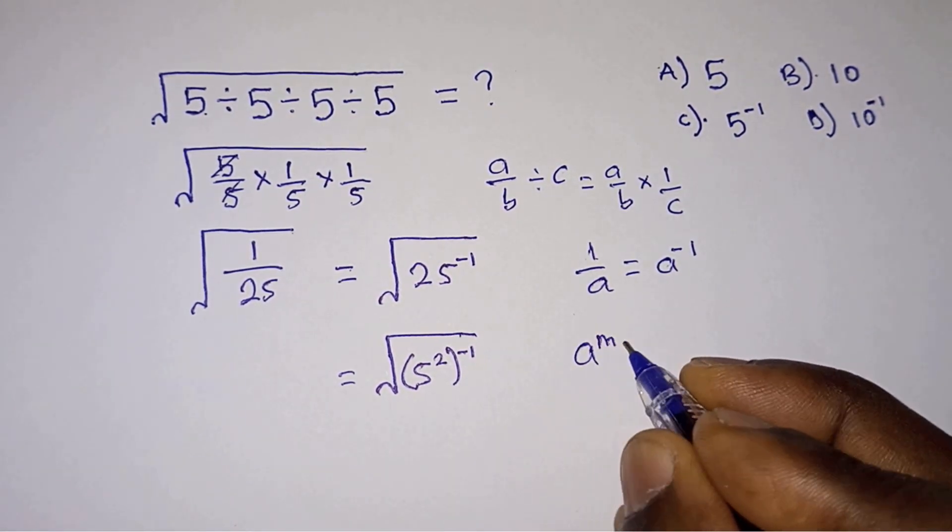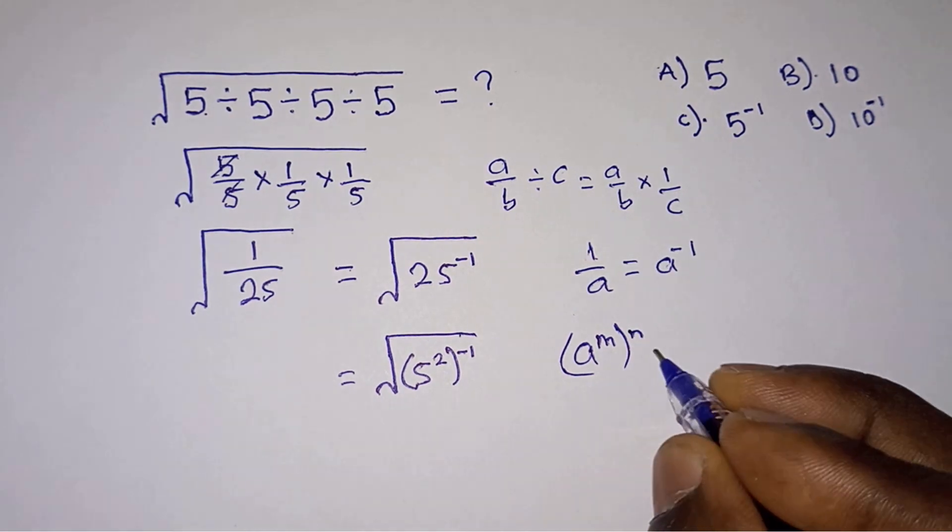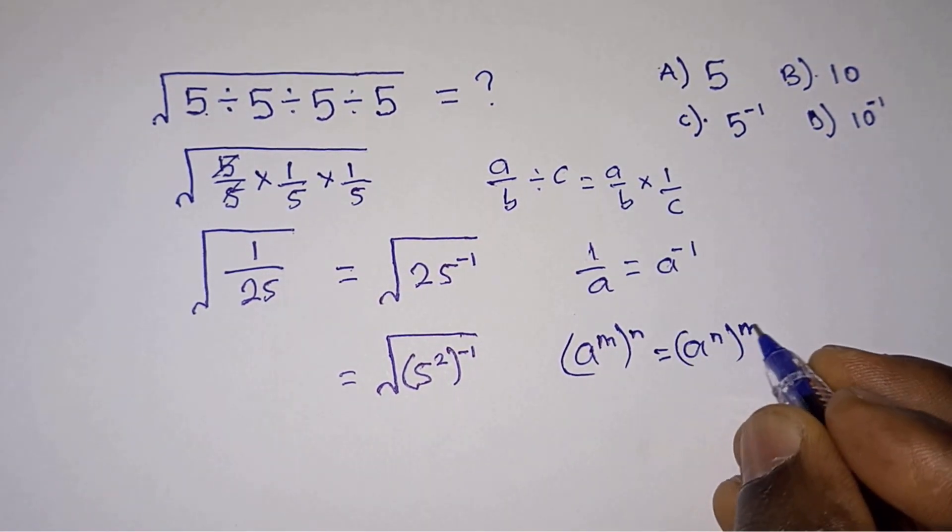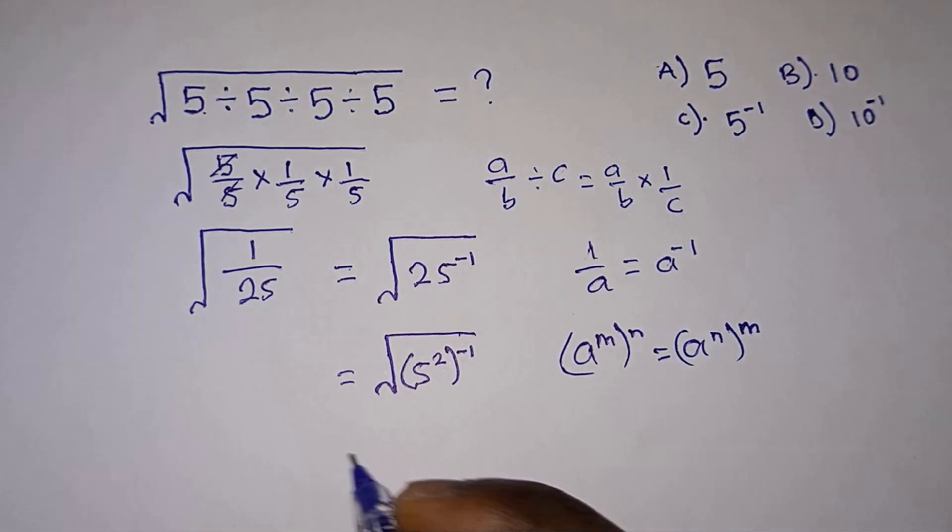Let's apply the power rule, which says that a to the power m all to the power n is the same as a to the power m times n.